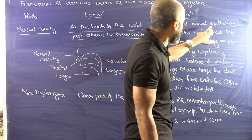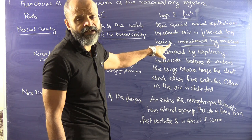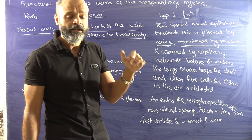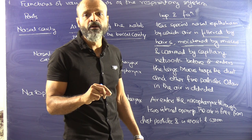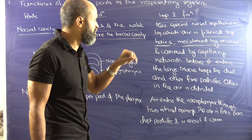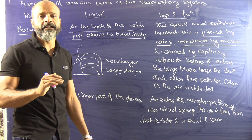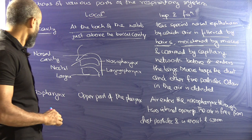The nasal cavity has special nasal epithelium by which air is filtered by hairs, so it becomes free of dust particles. The air is moistened by mucus — if the air has a higher temperature it might damage the alveoli when it enters the lungs. It is also warmed by a capillary network of blood cells, which increases the temperature before air enters the lungs. An additional function of mucus apart from cooling the air is to trap dust and other fine particles. There are also olfactory cells which detect the smell of the air.